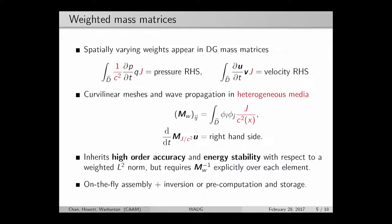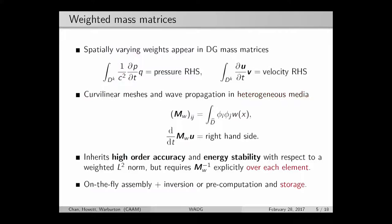However, if either you have curved meshes or heterogeneous media which varies inside an element, then you have to introduce a mass matrix with a spatially dependent weighting. This weighting causes issues because while you want this weighting to maintain higher order accuracy and energy stability, it requires us to compute an explicit inverse of a mass matrix over every single element. Whereas before we could invert one mass matrix and apply it to all elements, we now have to invert these explicitly because they vary from element to element.